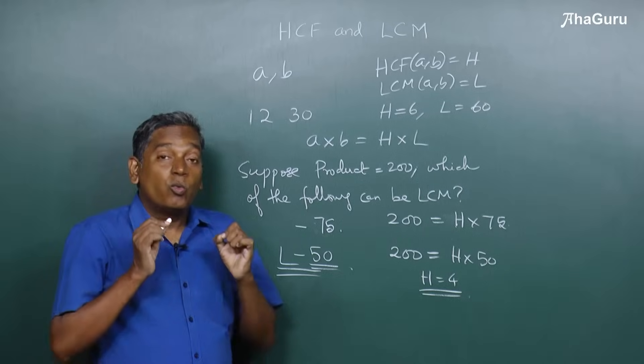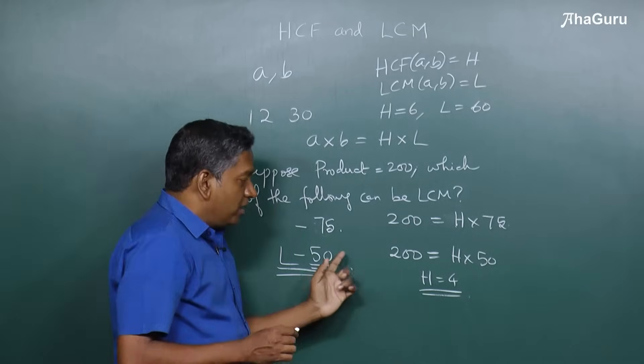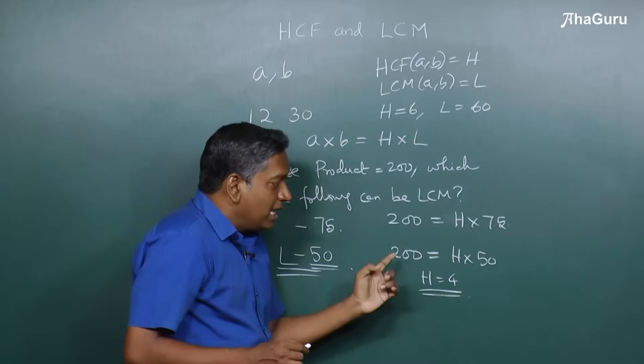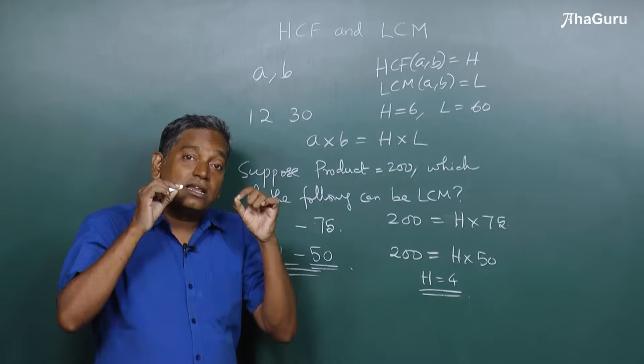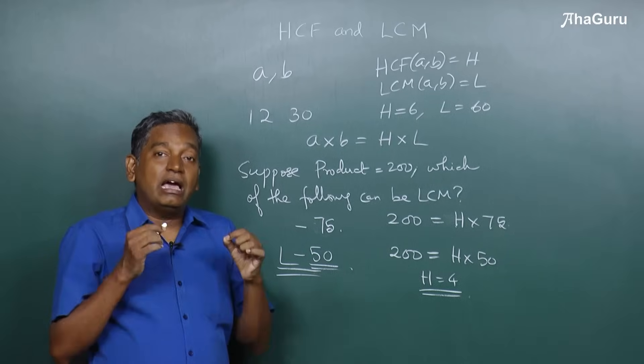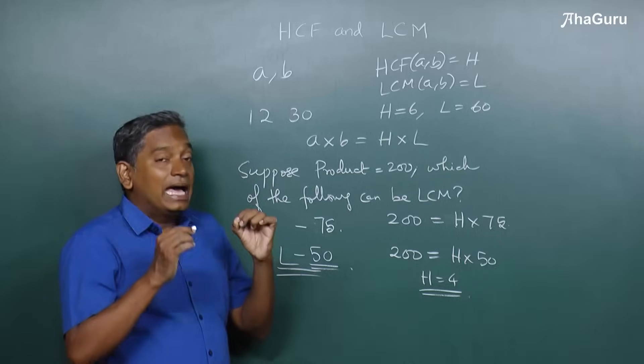This is wrong. Why is this wrong? Because this kind of doing only accounts for this formula, but there is an extra property that you have to be aware of for HCF and LCM. And what is that property?